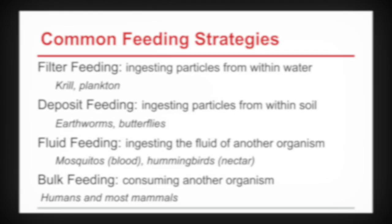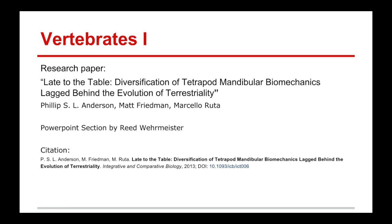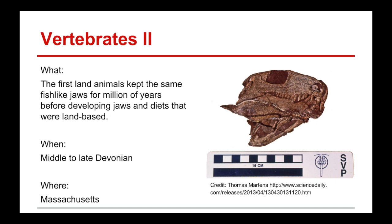My name is Reed Waremeister and I will be talking about a research paper entitled "Late to the Table: Diversification of Tetrapod Mandibular Biomechanics Lagged Behind the Evolution of Terrestrial Diets," by Philip S.L. Anderson, Matt Friedman, and Marcello Ruda. This paper talks about how first land animals kept fish-like jaws for millions of years before they started developing jaws and diets suited for their land-based habitats.